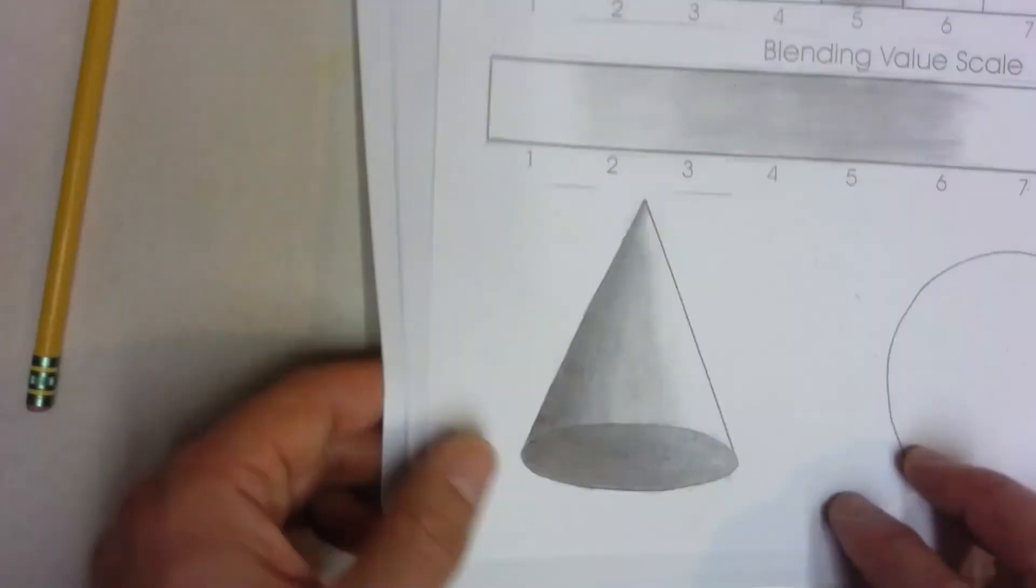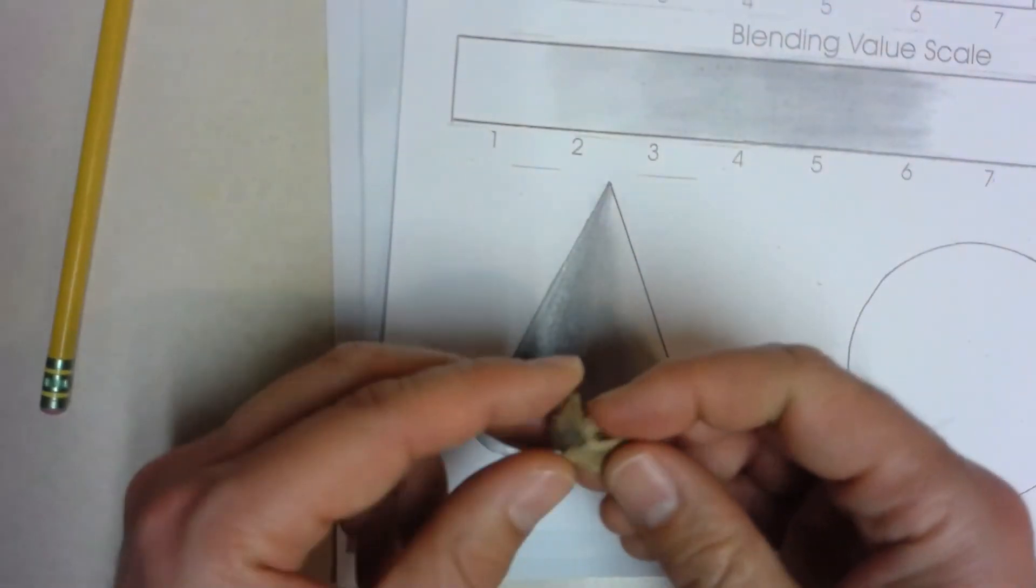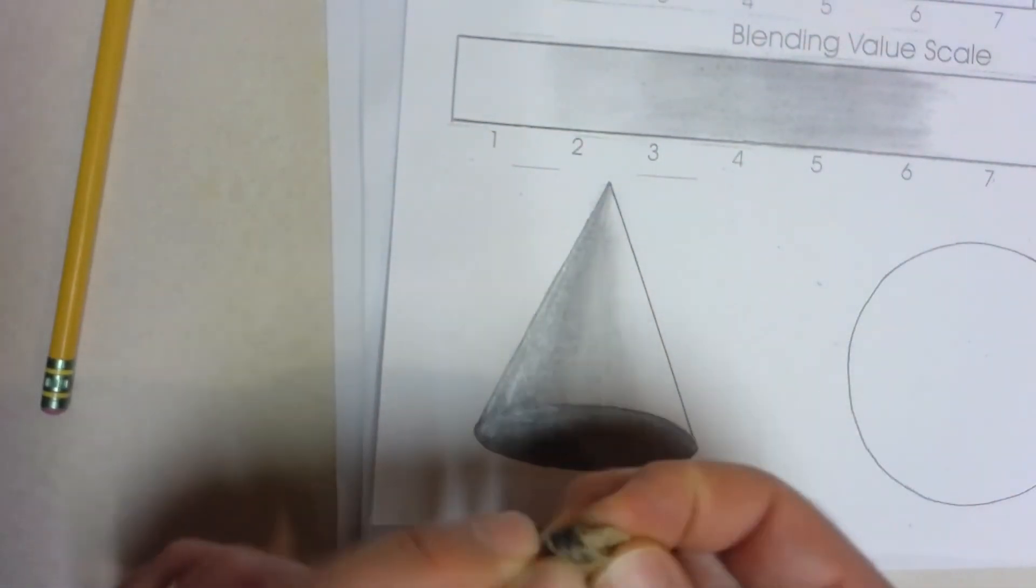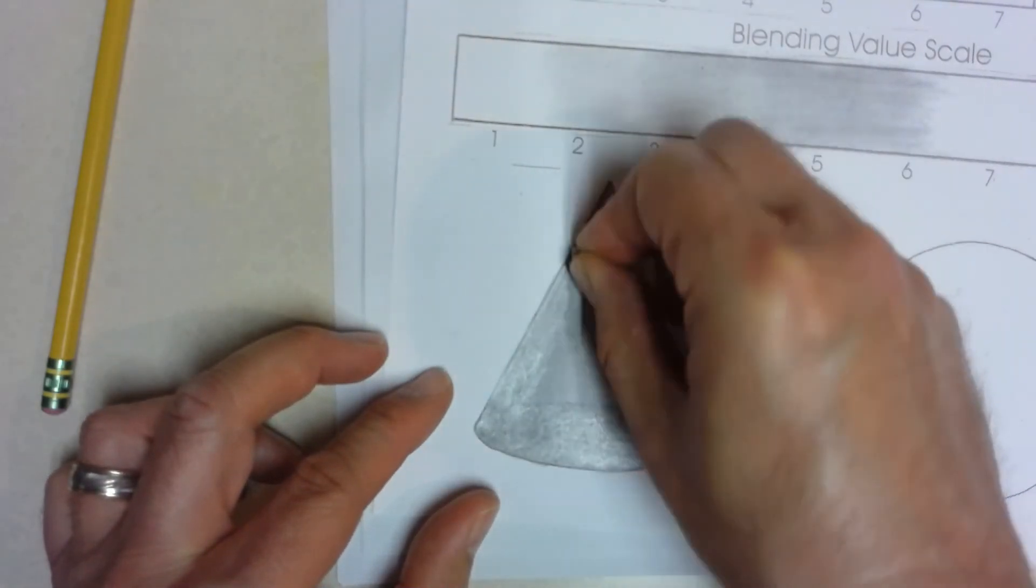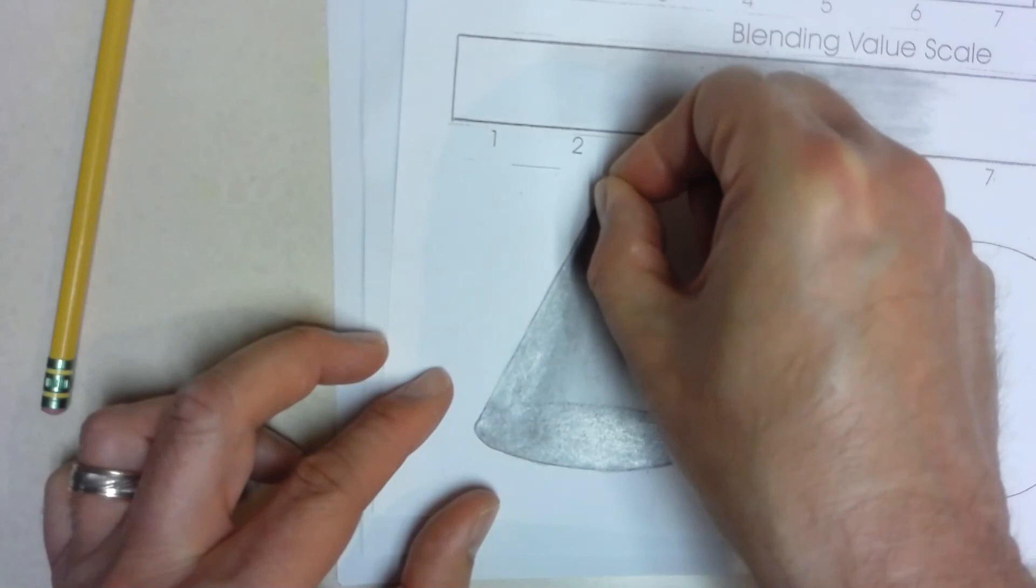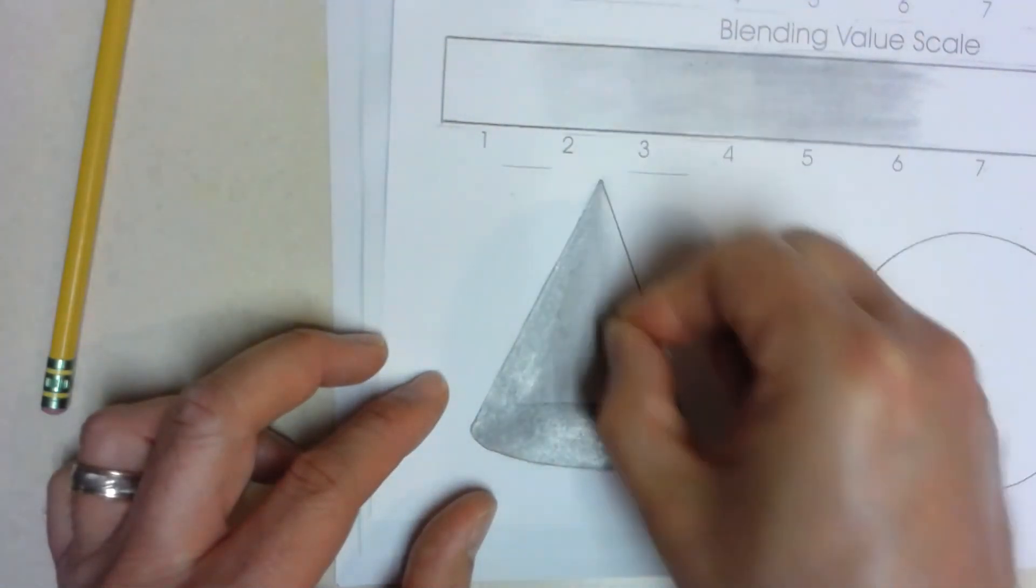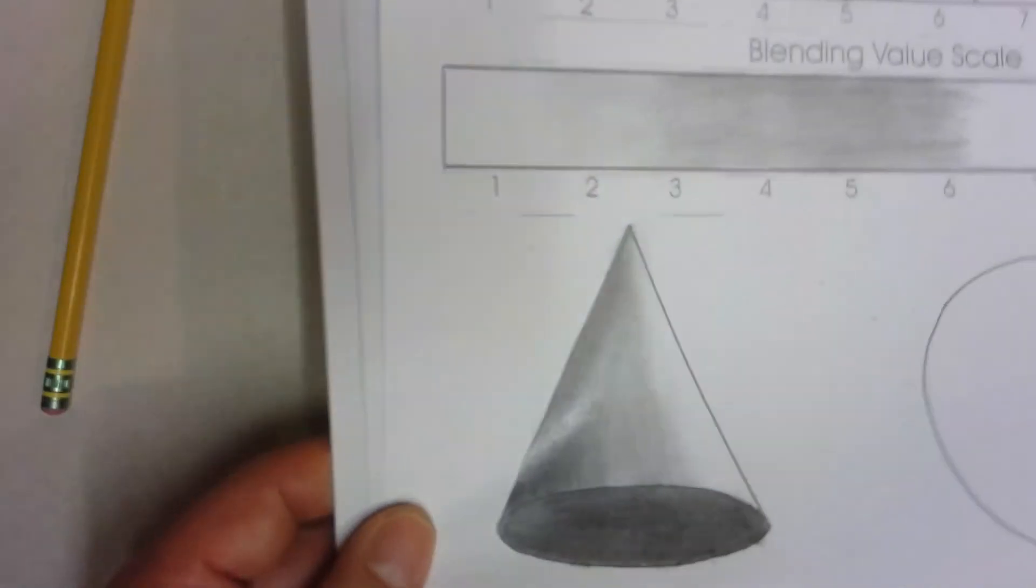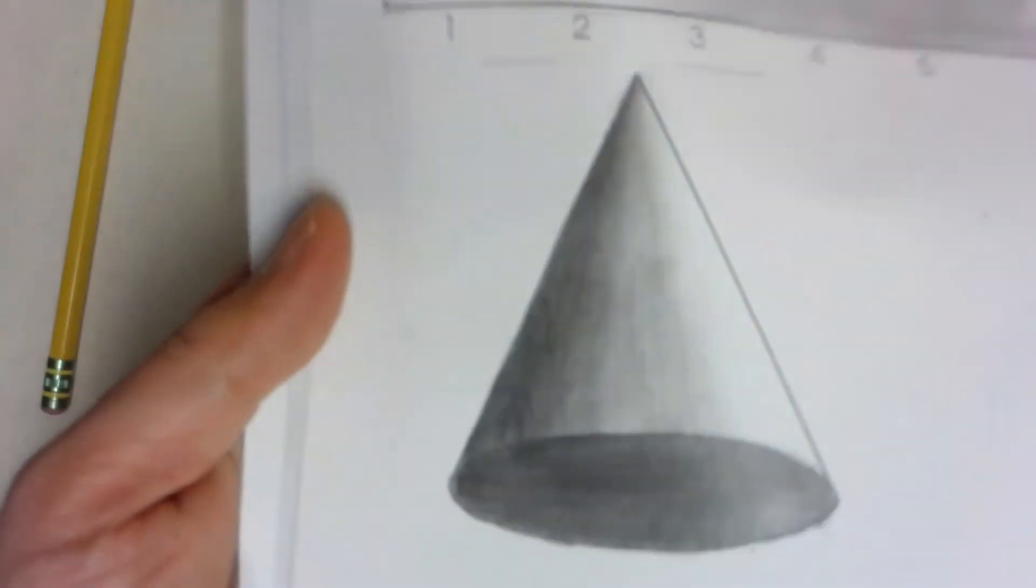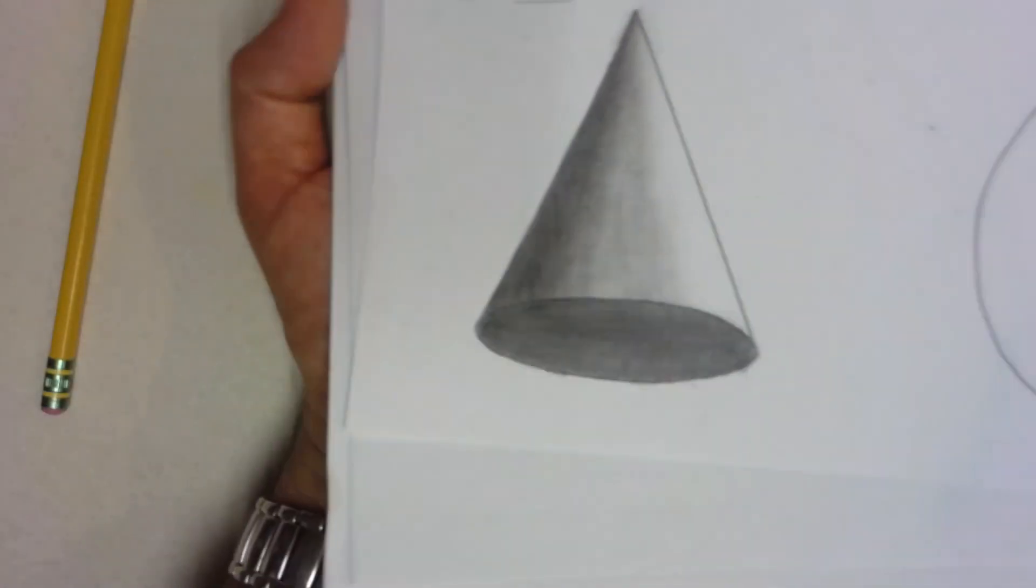And again, I'm sorry that the light causes such a reflection on here. Come back to the dark side of the force here and use the dark side of the blending stump. Come in and blend that a little bit more. Now I'm not giving this quite the time and attention that it deserves, but I think you can see that it looks fairly three-dimensional.